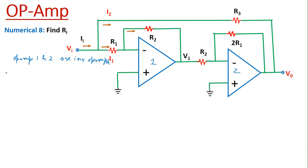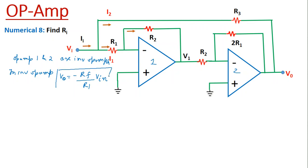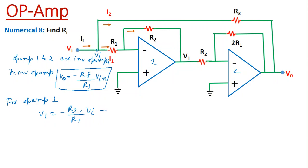In the inverting op-amp, the output voltage is equal to minus of feedback resistance divided by the input-side resistance R1, multiplied by the input voltage Vin. This is the general equation for an inverting operational amplifier. For op-amp 1, the output voltage is V1, so V1 is equal to minus R2 over R1 multiplied by the input voltage Vi. This is equation number 1.